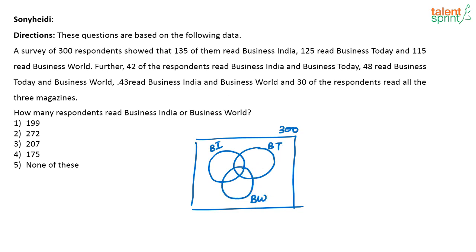135 of them read Business India, so this set total is 135. This set total is 125 — they read Business Today — and 115 read Business World. 42 of the respondents read Business India and Business Today, 48 read Business Today and Business World, 43 read Business India and Business World, and 30 of them read all three magazines. So the center of the Venn diagram is 30.